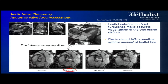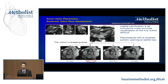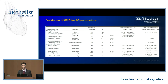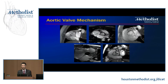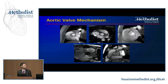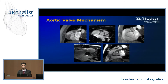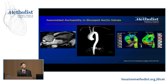Where CMR really shines is direct planimetry of the valve itself. By finding the point where the leaflet tips meet and setting a scan plane there, we can measure the anatomic valve area at its largest opening — 0.7 cm² in this example. This has been validated alongside peak velocities and the continuity equation. CMR can also identify whether a valve is quadricuspid or, more commonly, bicuspid, and can assess surgical valve function to some degree.